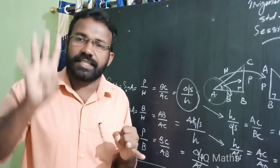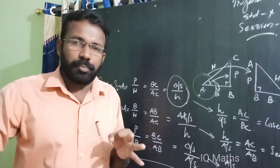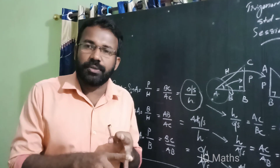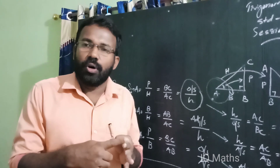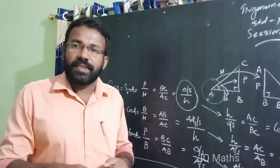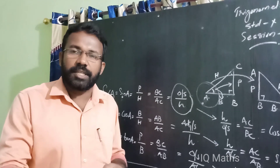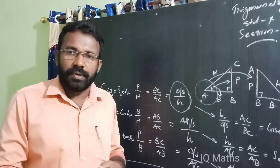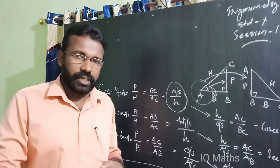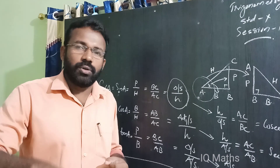Let us repeat: sin A equals opposite side by hypotenuse. Cos A equals adjacent side by hypotenuse. Tan A equals opposite side by adjacent side. Reciprocal of cos A is sec A. Reciprocal of sin A is cosec A. Reciprocal of tan A is cot A.